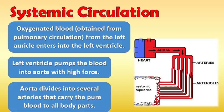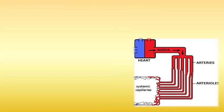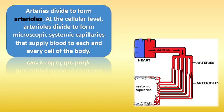The aorta divides into several arteries that carry pure blood to all body parts. These arteries divide to form arterioles, and at the cellular level, arterioles divide to form microscopic systemic capillaries that supply blood to each and every cell of the body.